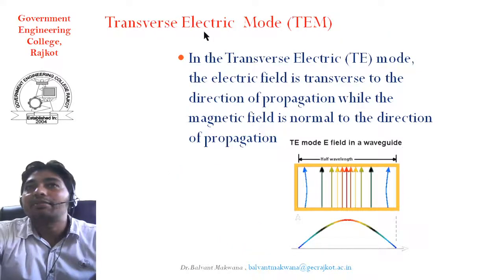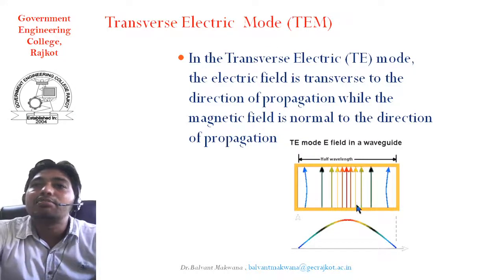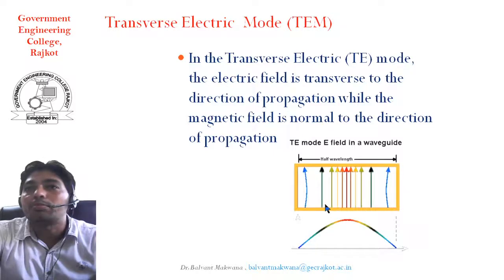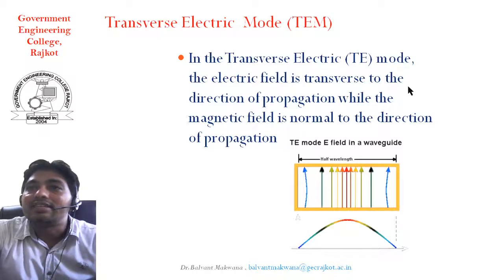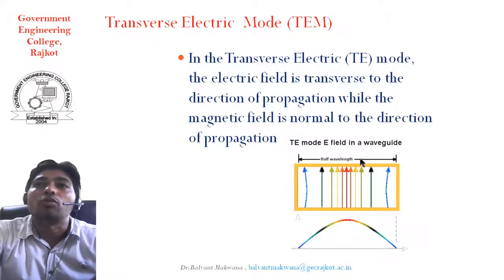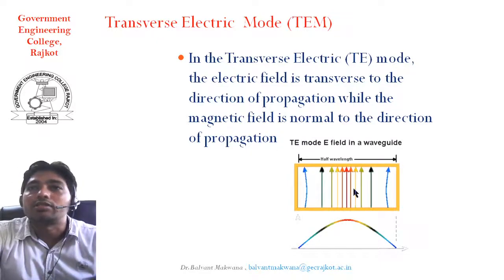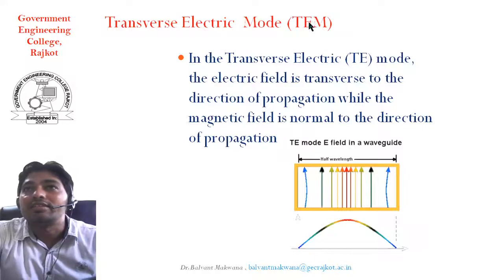The first one is called the transverse electric mode. In the transverse electric mode, only the electric field is perpendicular to the direction of propagation. The wave is propagating along the z direction, so the electric field vector is only perpendicular to the direction of propagation. This mode is called the transverse electric mode, or TE mode.